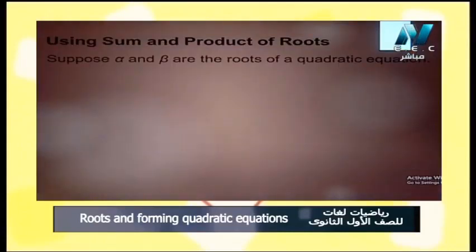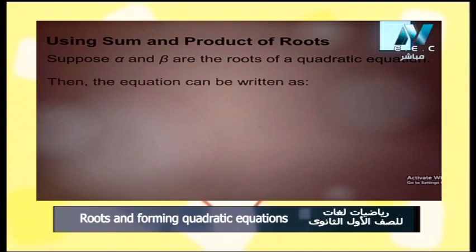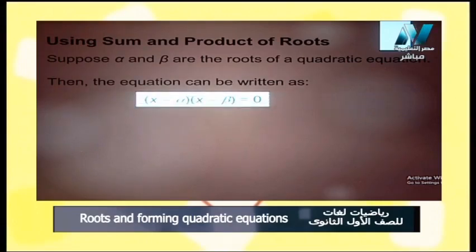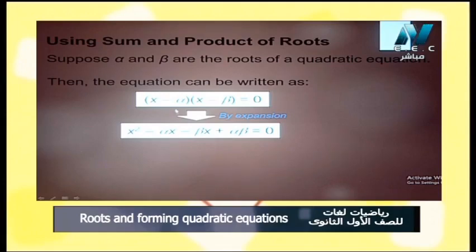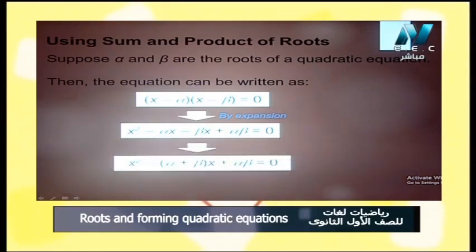Using the sum and product of roots: suppose alpha and beta are the two roots of the quadratic equation. Then the equation can be written as x minus alpha multiplied by x minus beta equals 0. By expansion: x² minus beta·x minus alpha·x plus alpha·beta equals 0, and taking x as a common factor from the middle terms.